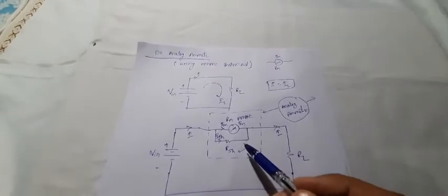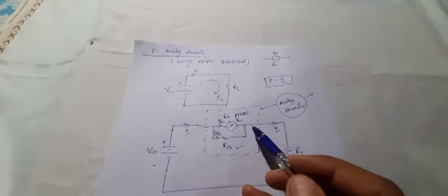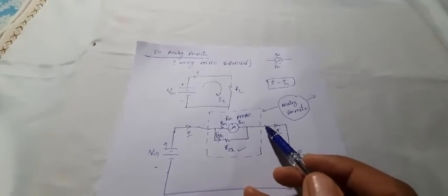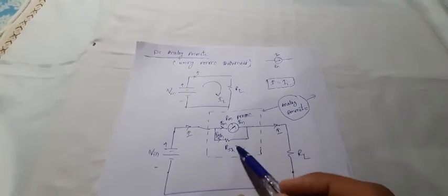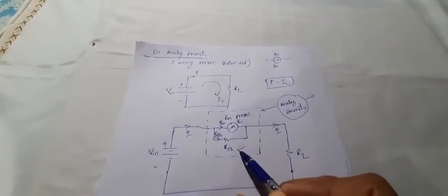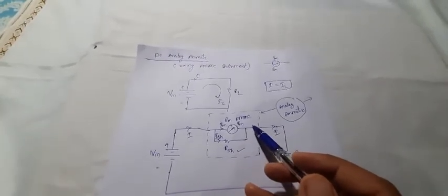The ammeter should not affect the parameters of the circuit. Hence, the resistance of this particular unit should be as small as possible — almost negligible. While designing the ammeter, we will select the value of RSH to be very small, so that the parallel combination or equivalent resistance of these two is very small. As the resistance is very small, the voltage drop across the entire ammeter is very less, so it will not much affect the circuit.